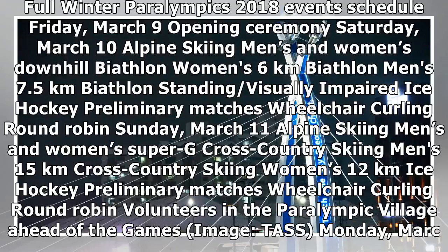Full Winter Paralympics 2018 events schedule: Friday March 9 — opening ceremony. Saturday March 10 — alpine skiing men's and women's downhill, biathlon women's 6km, biathlon men's 7.5km biathlon standing, visually impaired, ice hockey preliminary matches, wheelchair curling round robin. Sunday March 11 — alpine skiing men's and women's Super G, cross country skiing men's 15km, cross country skiing women's 12km, ice hockey preliminary matches, wheelchair curling round robin.